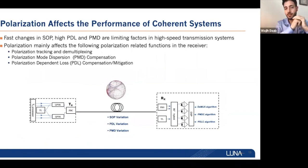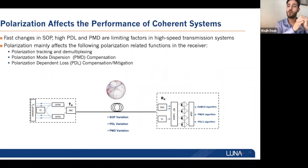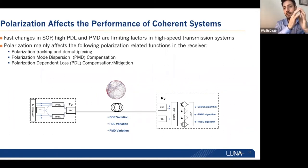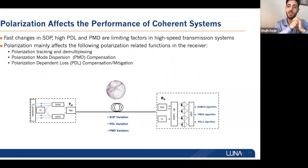For coherent detection receivers, those receivers are designed to compensate for PMD, mitigate PDL, and perform SOP tracking and demultiplexing. Polarization is very important in this application — any high PMD or high PDL will cause issues and reduce the maximum data throughput.